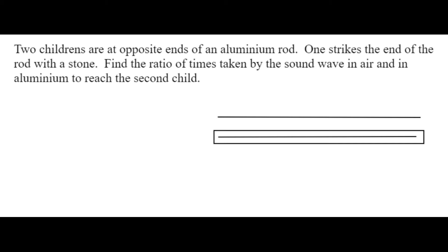Two children are at opposite ends of an aluminium rod. One strikes the end of the rod with a stone. Find the ratio of time taken by the sound wave in air and in aluminium to reach the second child.